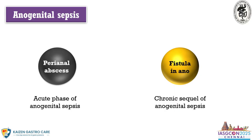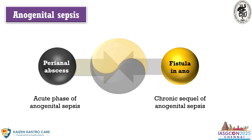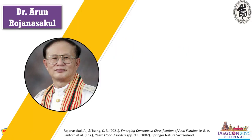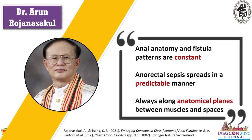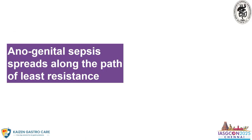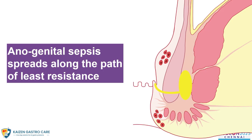Abscess is the acute phase and fistula is the chronic phase, but we should club them together and call it anogenital sepsis so we can apply justice for every fistula. Dr. Arun Rajanaskal has three powerful sentences: anal anatomy and fistula patterns are constant — the surgeon has to learn them. Anorectal sepsis spreads in a predictable pattern; there is no rocket science. It always spreads along the path of anatomical planes between muscles and spaces.